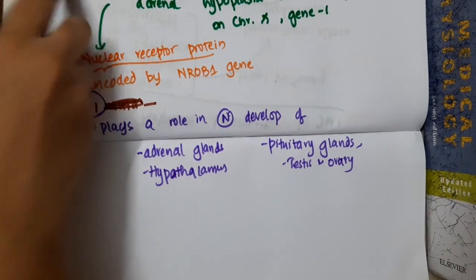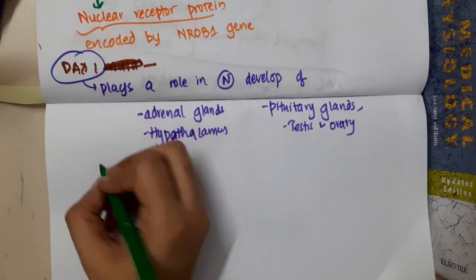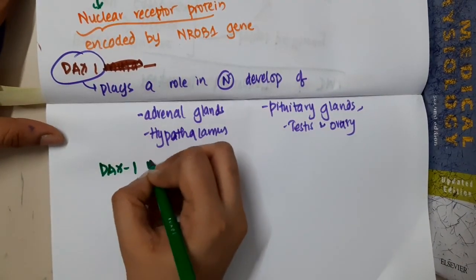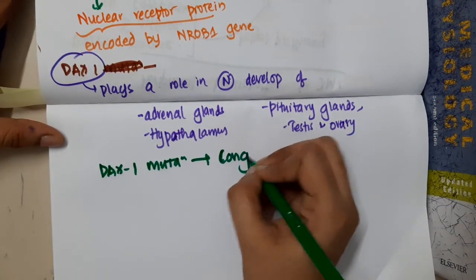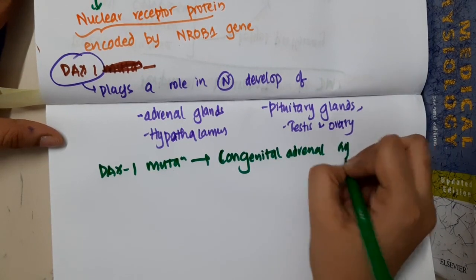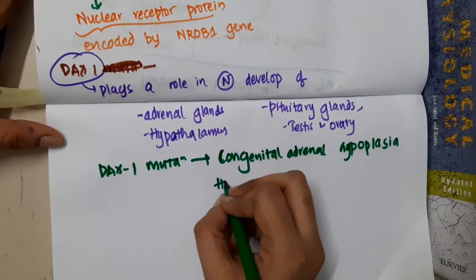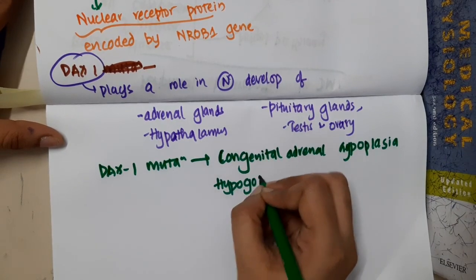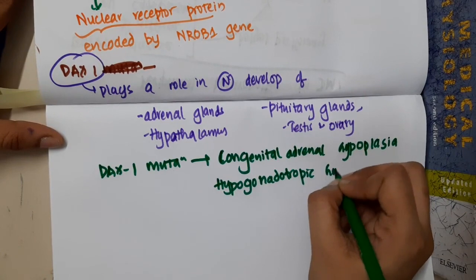When there is any mutation of this gene, that is if there is DAX1 mutation, this results in congenital adrenal hypoplasia and also results in hypogonadotropic hypogonadism.